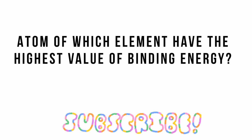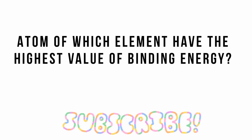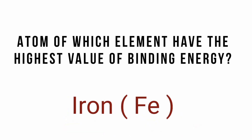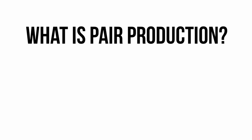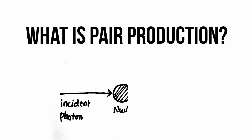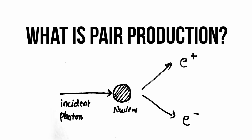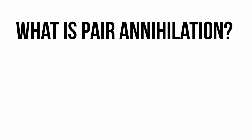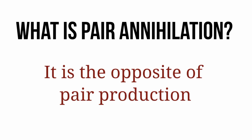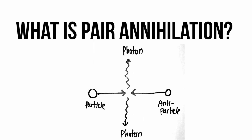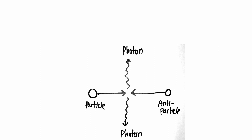The atom with the highest value of binding energy is iron (Fe). What is pair production? Whenever a high energy photon hits the nucleus, a particle and antiparticle are created — this is pair production. What is pair annihilation? It is the opposite: a particle and antiparticle collide and their mass is converted into the energy of two gamma photons.